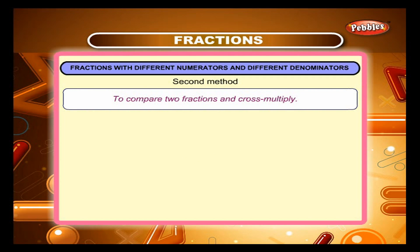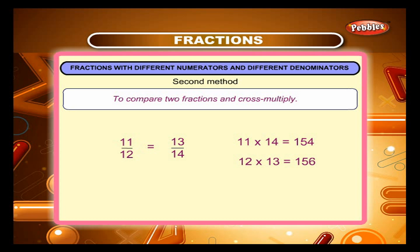Second Method: To compare 2 fractions, cross multiply. For example, to compare 11/12 and 13/14: 11 × 14 = 154 and 12 × 13 = 156. Since the two products are not equal, the fractions are not equivalent. Since the first product 154 is smaller than the second product 156, therefore 11/12 is smaller than 13/14, or 13/14 is greater than 11/12.